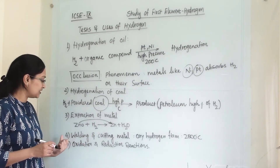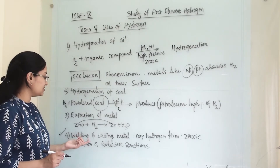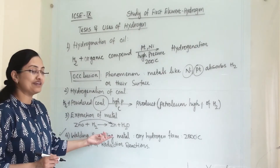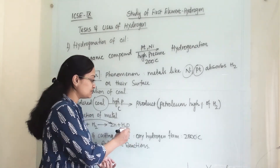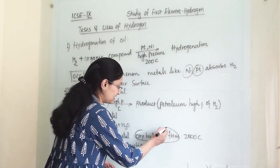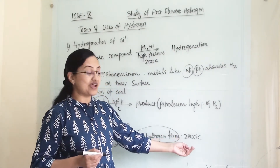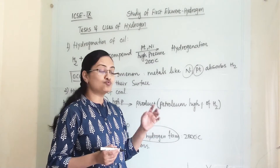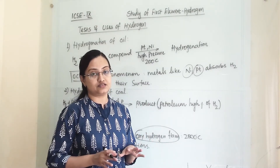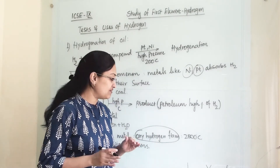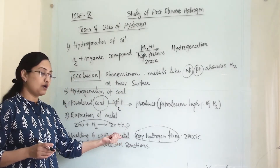Fourth, and importantly, we use hydrogen in welding and cutting metals. We use the oxy-hydrogen flame for this purpose, which has a temperature as high as two thousand eight hundred degrees Celsius. That is why it can be used in cutting and welding of metals.